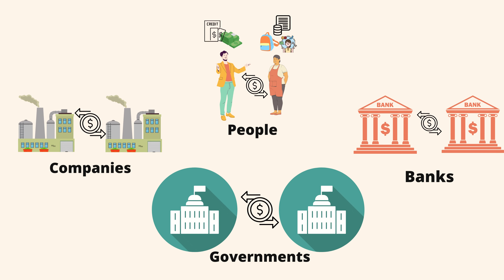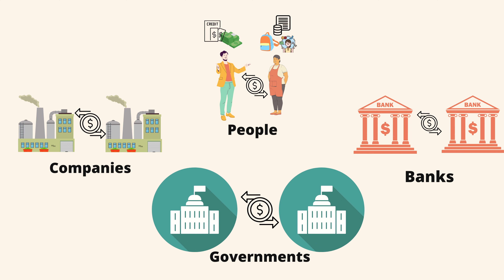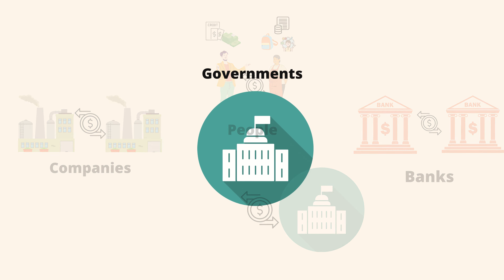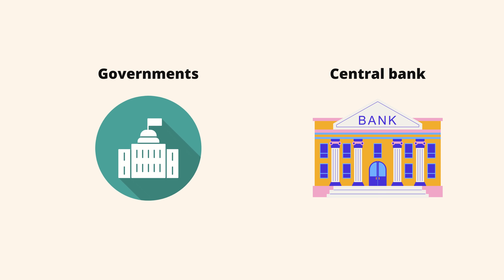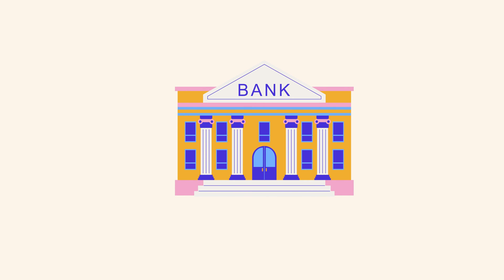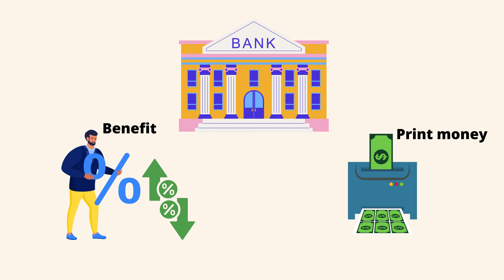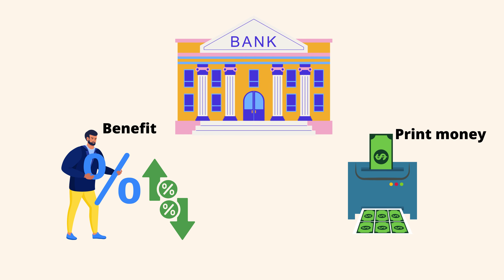Individuals, companies, banks, and governments participate in transactions, exchanging money and credit for goods, services, and financial assets. The biggest buyer and seller is the public sector, which consists of two main parts: a central government that collects taxes and spends money, and a central bank, which differs from other buyers and sellers because it controls the amount of money and credit in the economy. It does this by manipulating interest rates and printing new money. For these reasons, the central bank is a key player in the flow of credit.